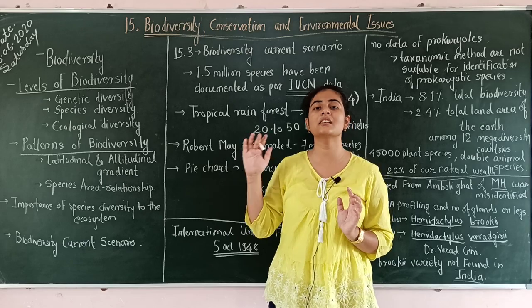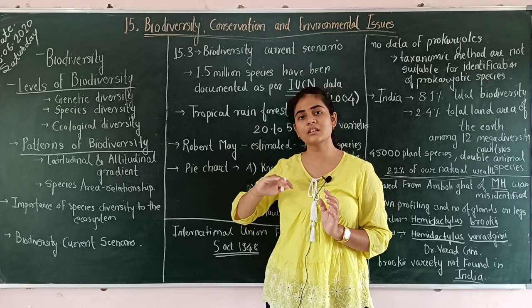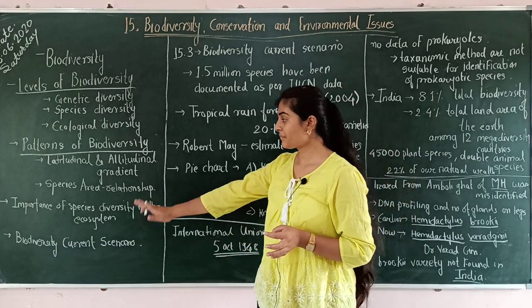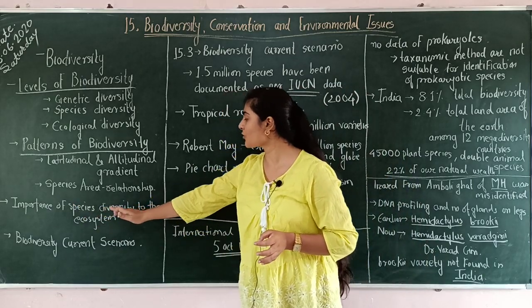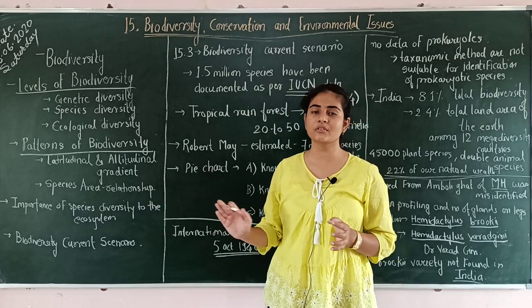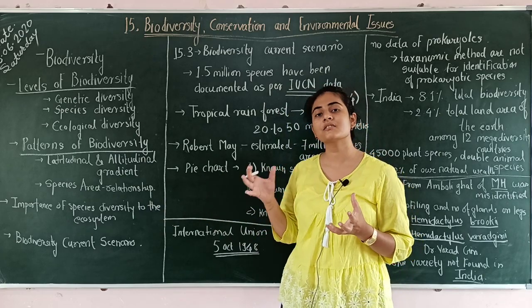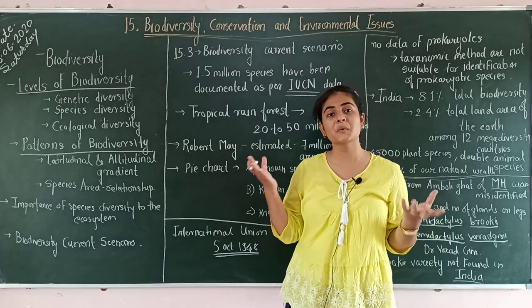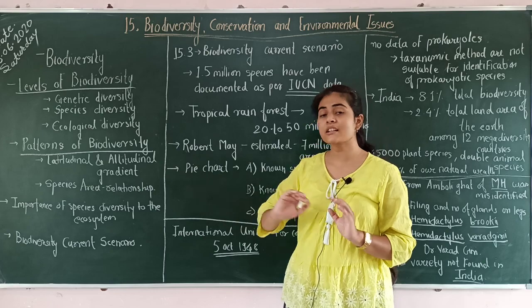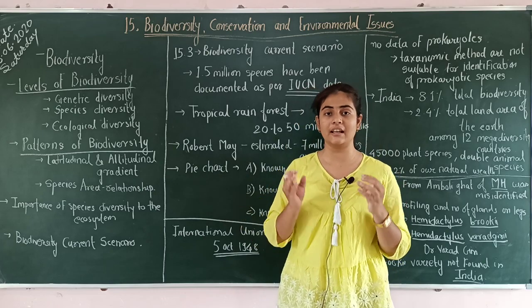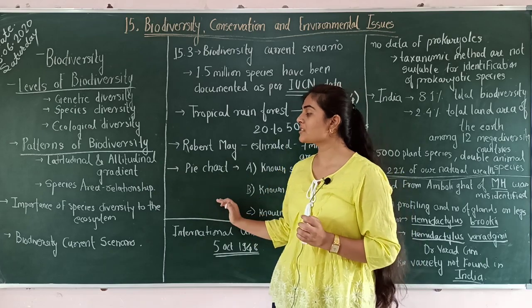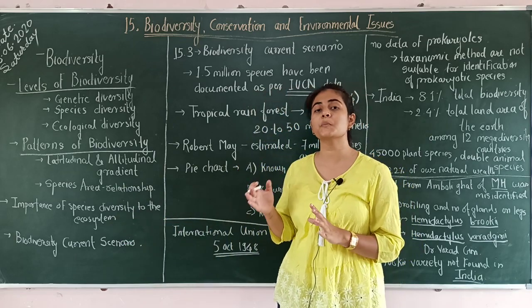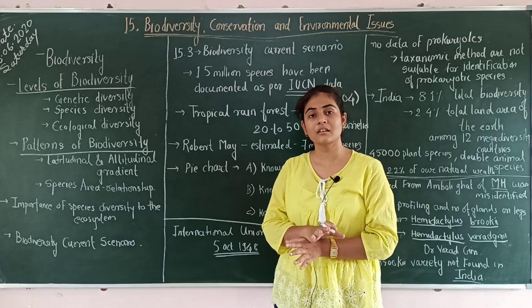Species increase but after a certain limit a constant rectangular hyperbola is shown — that is the species-area relationship. Then the importance of species biodiversity to the ecosystem: that means the richness of species, how many species are present on the earth. The species richness of the ecosystem is important — the ecosystem and the species are equally important.